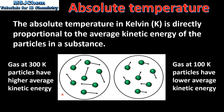Here we have two samples of gas. The gas on the left is at 300 Kelvin and the gas on the right is at 100 Kelvin. The particles of gas at the higher temperature have higher average kinetic energy, and the particles of the gas at the lower temperature have lower average kinetic energy.